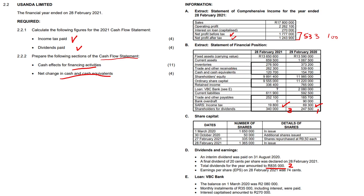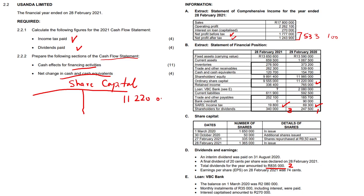First, let's look at the ordinary share capital account. The reason I'm doing this here is to show you in T-account form how to calculate the changes in shares. So share capital — your balance at beginning of year: 11,220,000. Balance at end of year: 9,555,000. And here will be your repurchase, and here will be your sale.